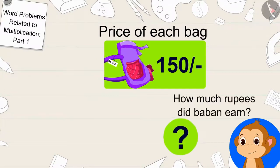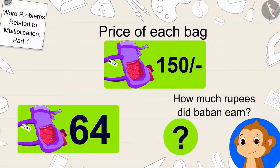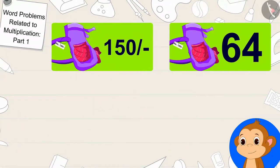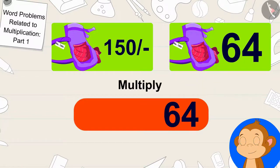To find out how many rupees Babban earned by selling 64 bags, we only have to multiply 64 bags by 150 rupees.